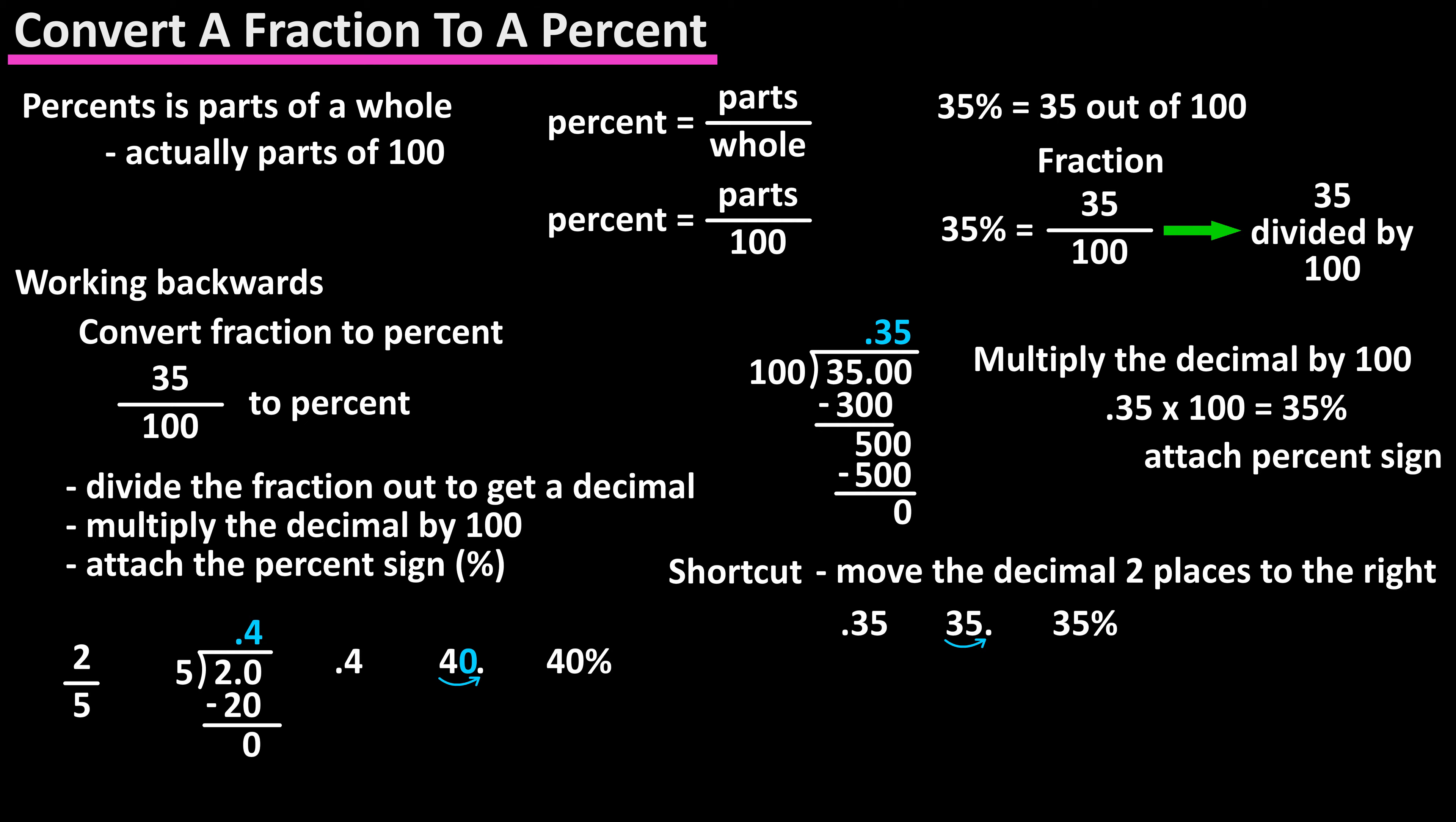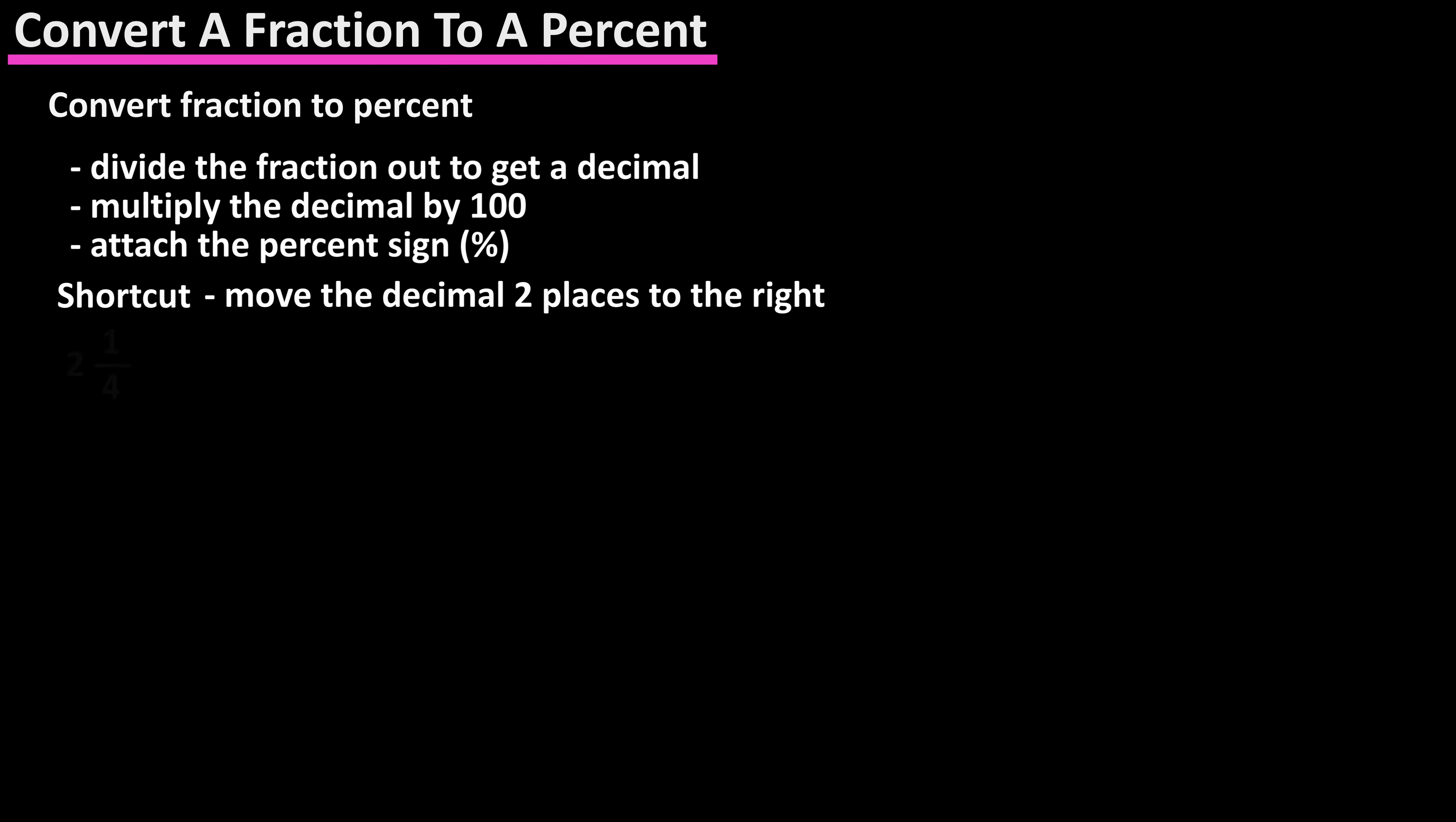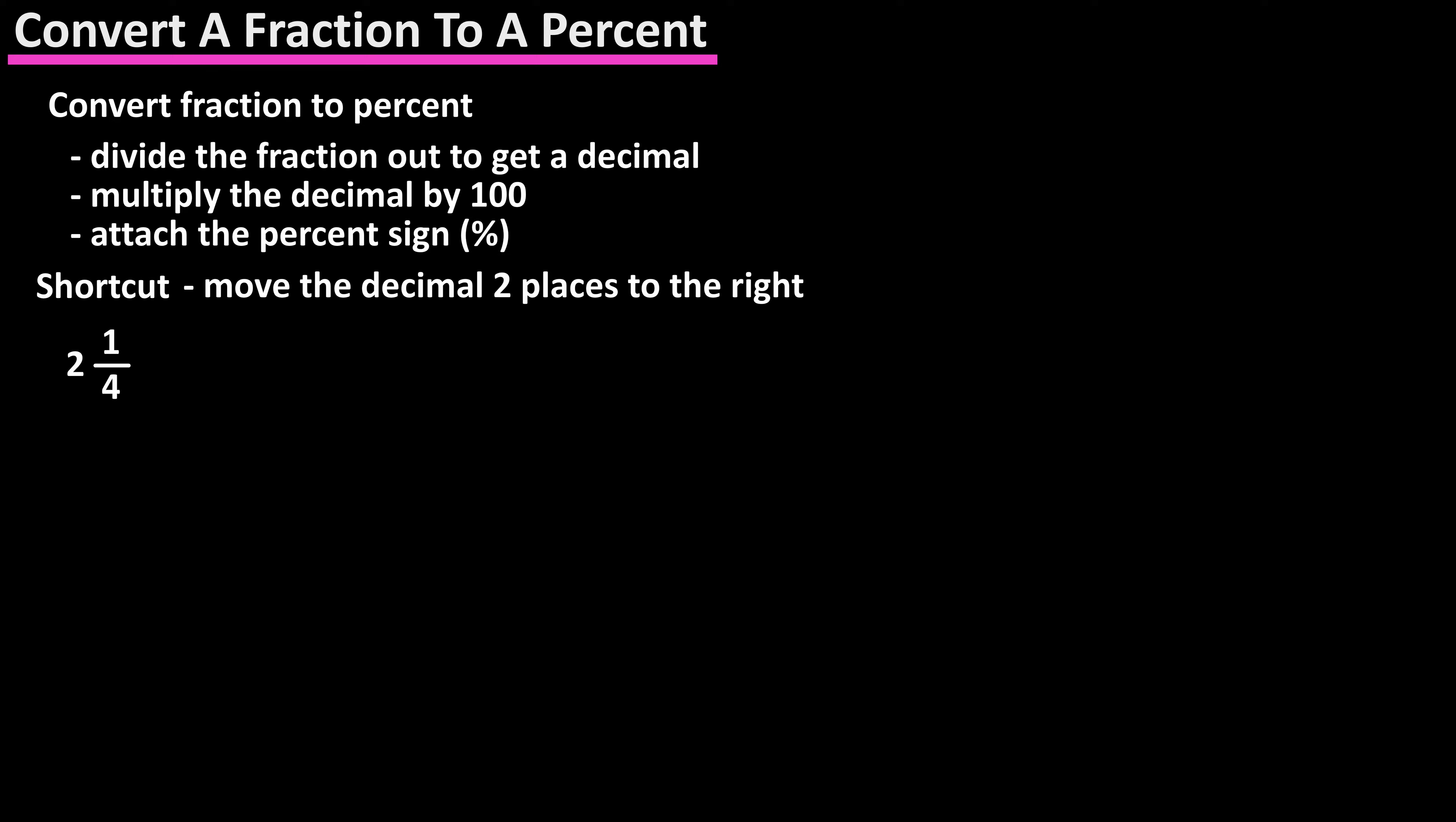For the mixed number fraction of 2 and 1 over 4, we first convert it to an improper fraction, which I've written out on the screen, and that gives us 9 over 4. So we divide 9 by 4 to get 2.25. We then move the decimal two places to the right, and attach a percent sign to get 225%.